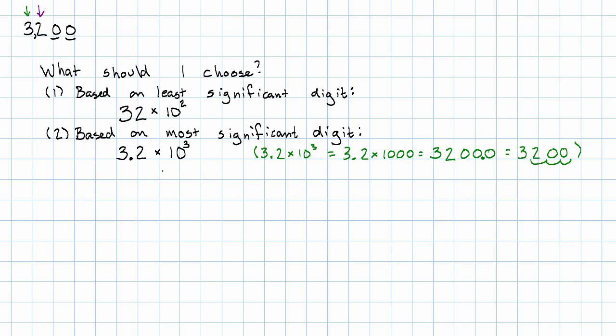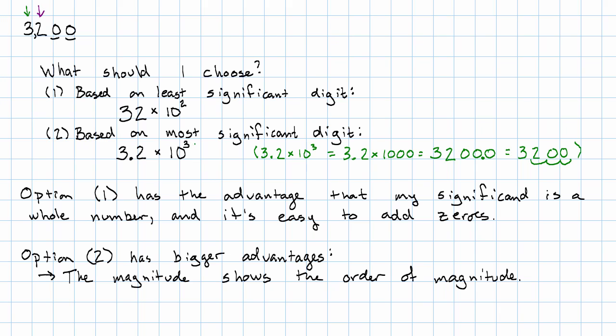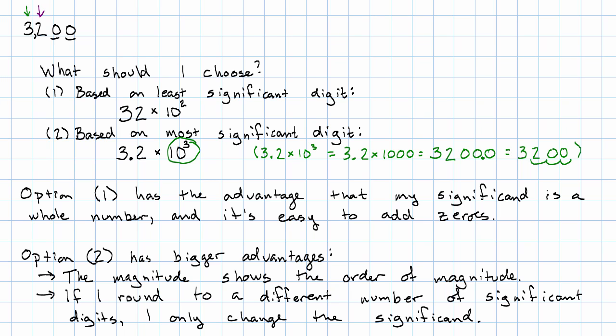So if I choose option one, I get one really big advantage. My significand is a whole number. If I want to go back to decimal notation, I just add zeros on the end. But it turns out option two has even bigger advantages. The obvious one is that the magnitude actually shows the order of magnitude. But the most important advantage is that if I choose to round to a different number of significant digits, I don't have to do any messy recalculating. I just round the significand.